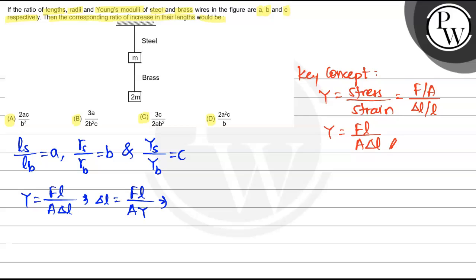So this gives delta L of steel divided by delta L of brass equals FL by AY of steel times, and now one by delta L is there, so its reverse will be AY divided by FL. Reversing it: denominator goes to numerator and numerator goes to denominator.